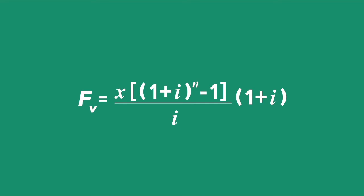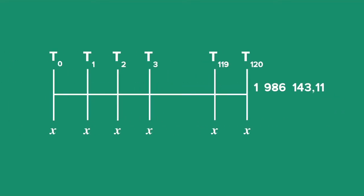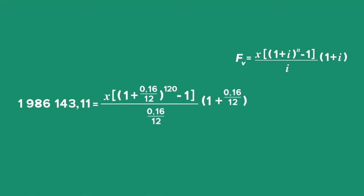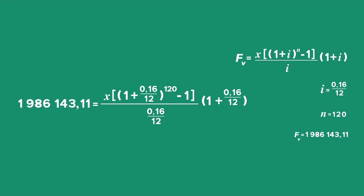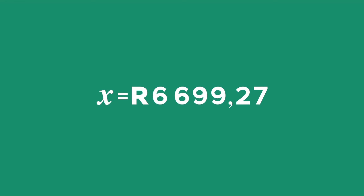We can represent the information for the sinking fund on a timeline. Substitute values for I, N, and the future value. The monthly interest rate we use is 0.16 divided by 12. N is 10 times 12, which gives us 120 months, and the future value is R1,986,143.11. You can use your calculator to simplify the fractions and change the subject of the formula to find X. The monthly payment needed for replacement of the new machine is R6,699.27.